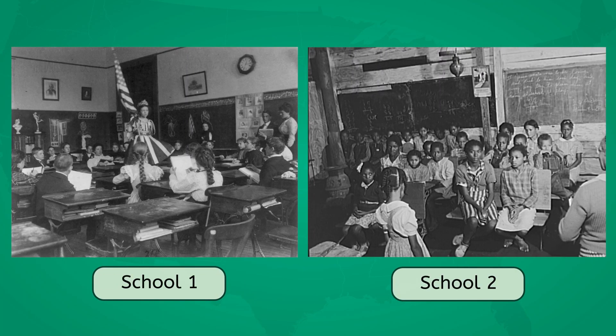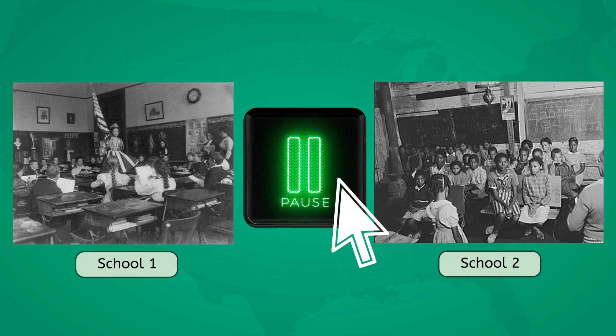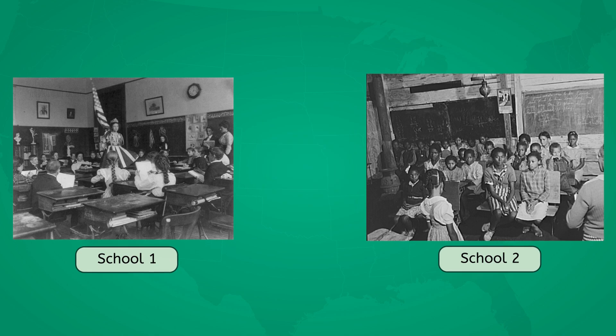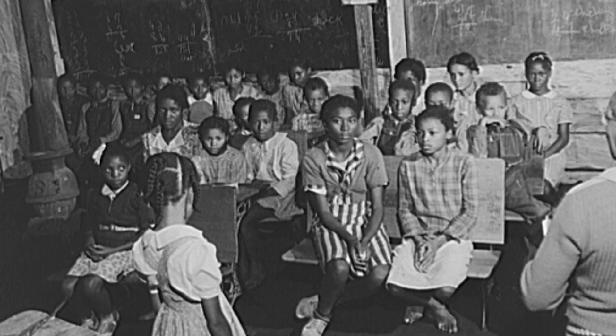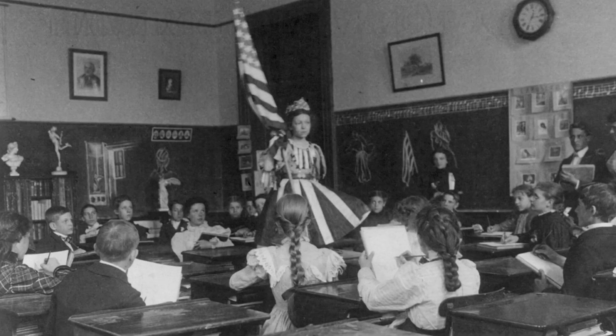Now take a moment to pause the video and look at these two classrooms. Do these schools seem equal? Which would you have wanted to attend? In reality, separate facilities were never equal. Across both the North and the South, state governments underfunded Black schools. This resulted in overcrowded classrooms with students of a variety of ages, outdated materials, and poorly maintained facilities. Meanwhile, white schools generally had access to better resources, including more qualified teachers, modern equipment, and well-maintained buildings, reflecting the systemic inequality and discrimination embedded in American society.